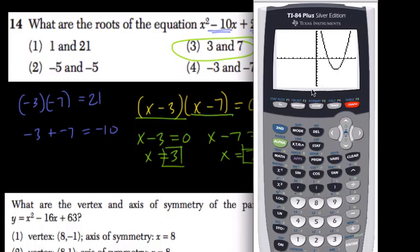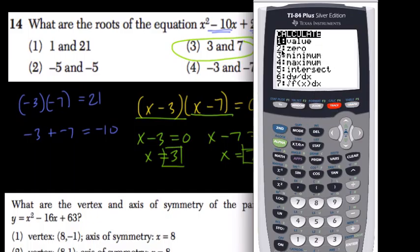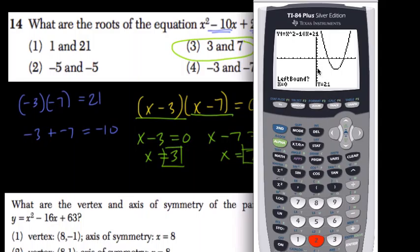And here, if you want to find the roots, you hit second, trace, and you want to find the zeros here. So you tell it, zeros are the roots, because the zeros are when you cross the x-axis. So here, let me just find the cursor, there it is.